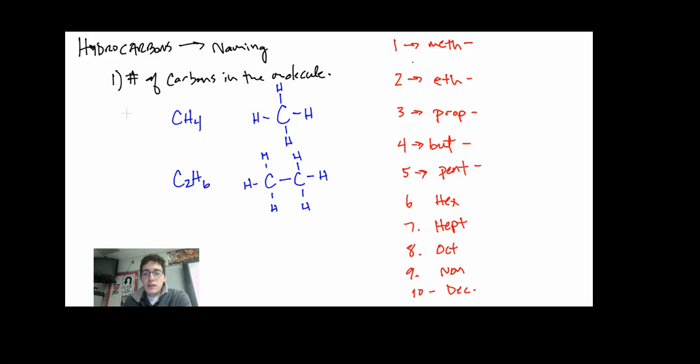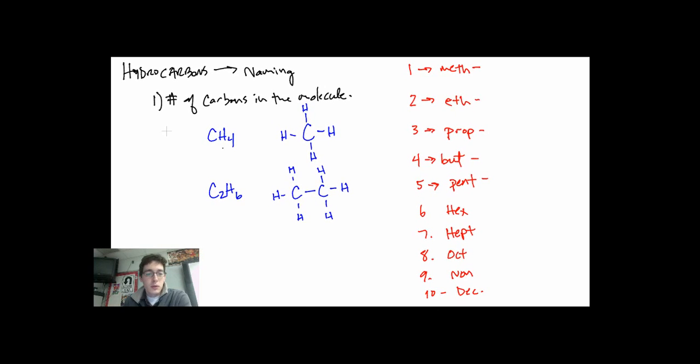So we've got 10 different prefixes here based on the number of carbons in that molecule. So if we're looking at, let's see, we've got a one, two, three, four, five carbon chain. And then this is filled with hydrogen. So I'm not going to take the time to draw them all in. But we know it's a hydrocarbon because we have only hydrogen and carbon.